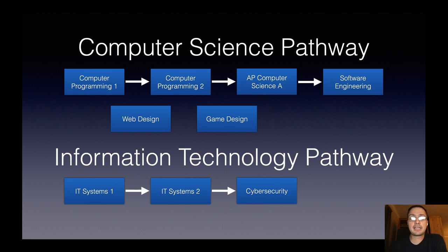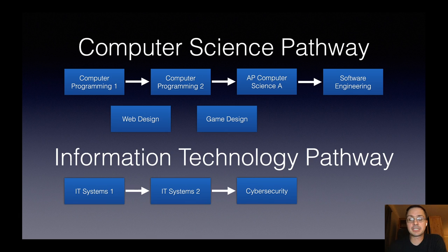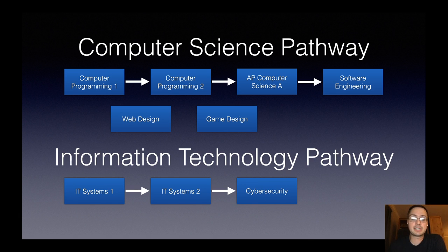We are really fortunate at Naperville North High School that we have a robust computer science and information technology pathway. Our computer science pathway has students starting in Computer Programming I and then progressing to Computer Programming II — each are one-semester courses. This course, AP Computer Science A, is the third course in the pathway. The next course is the software engineering course, which is also a full-year course. We also have computer science electives in web design and game design.